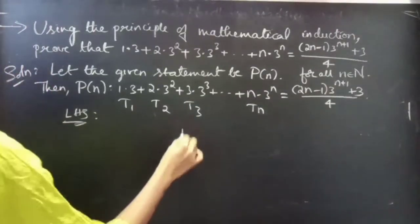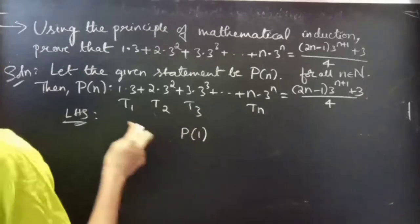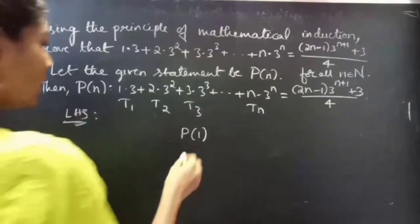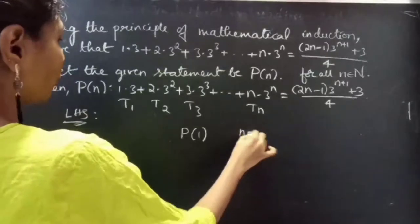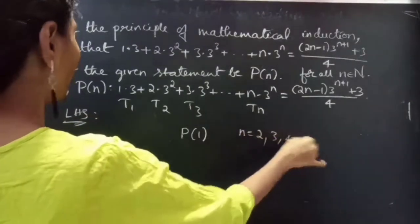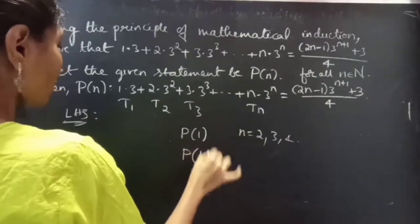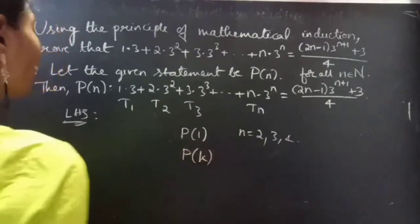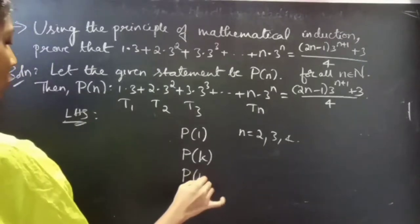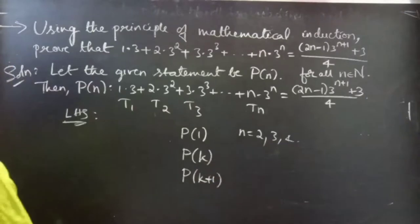Firstly, we will prove for P(1), that is, we will show that the statement is true for n=1. If needed, you can show that the statement is true for n=3, 4, 5 and so on. We will assume that the statement is true for n=k, and finally we will prove that the statement is true for n=k+1.